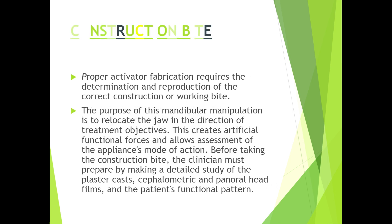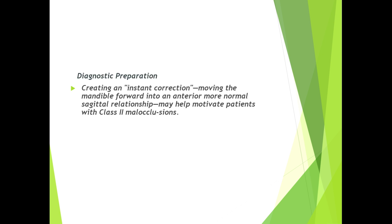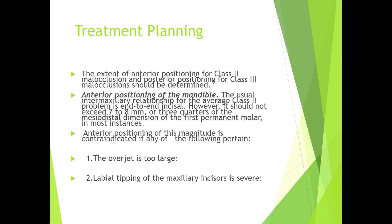Proper activator fabrication requires the determination and reproduction of the correct construction or working bite. The purpose of this mandibular manipulation is to relocate the jaw in the direction of treatment objectives, creating artificial functional forces and allowing assessment of the appliance's mode of action. Before taking the construction bite, the clinician must prepare by making a detailed study of plaster casts, cephalometric and panoramic head films, and the patient's functional pattern. Creating an instant correction — moving the mandible forward into a more normal sagittal relationship — may help motivate patients with Class 2 malocclusions.